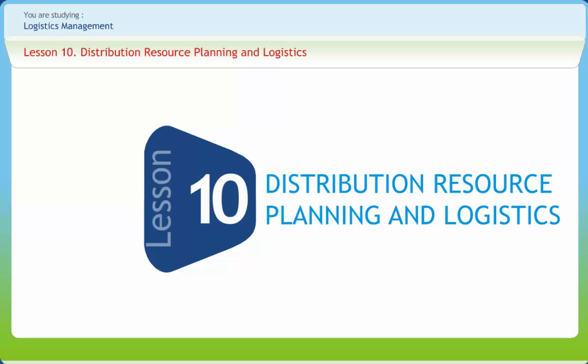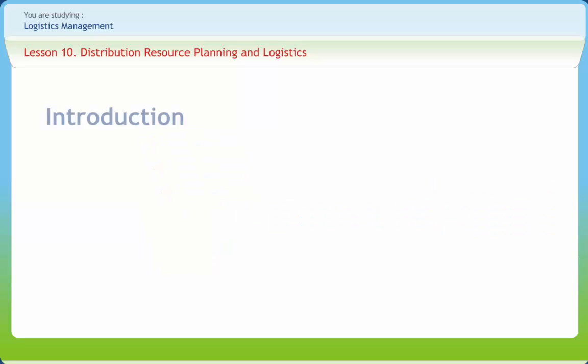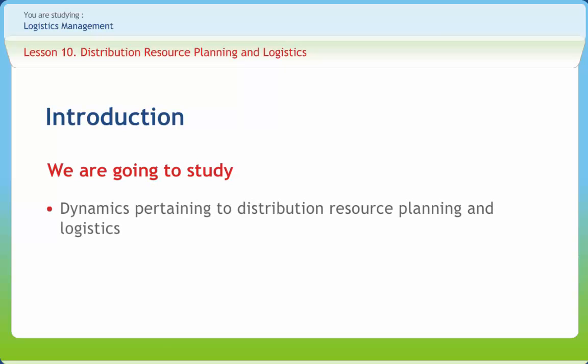Distribution Resource Planning and Logistics. We know that the supply channel is composed of three structures. The terminal point in the channel is the retailer who sells goods and services directly to the customer for their personal or non-business use. At the beginning of the chain is the manufacturer who focuses on the development and production of products and originates the distribution process.